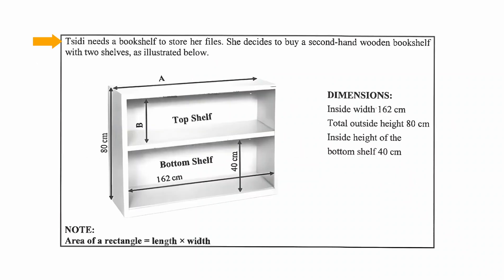The context states that Sidi needs a bookshelf to store her files. She decides to buy a second-hand wooden bookshelf with two shelves as illustrated. Analyzing the illustration, we see that we are given the inside width of the bottom shelf as 162 centimeters, the outside height of the bookshelf as 80 centimeters, and the inside height of the bottom shelf as 40 centimeters. Two dimensions are not given: the outside width of the bookshelf and the inside height of the top shelf.